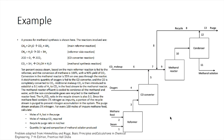Here is the example problem. A process for methanol synthesis is shown. The reactions involved are: methane plus water forming CO2 and H2 (main reformer reaction), methane plus water forming CO and H2 (reformer side reaction), CO plus oxygen forming CO2 (CO converter reaction), and CO2 reacting with hydrogen to form methanol and water (methanol synthesis reaction).